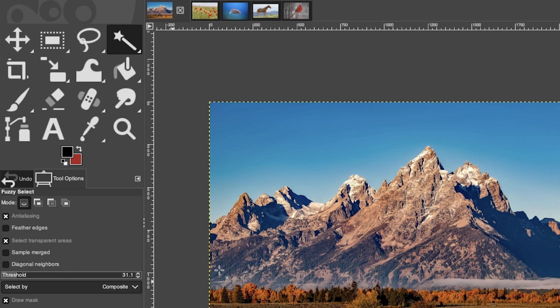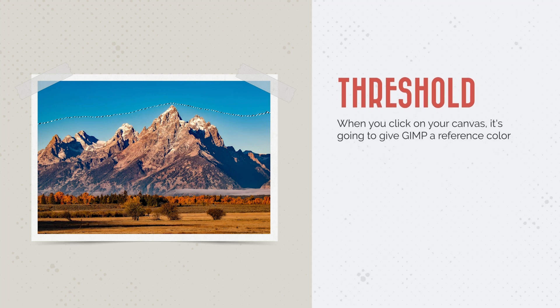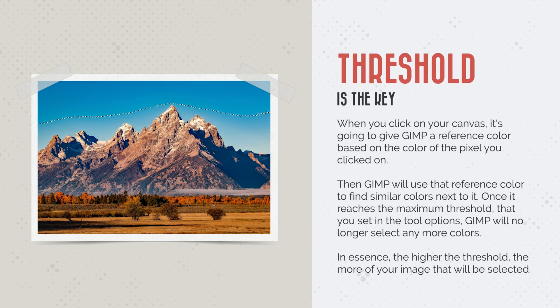Here's how it works: when you click on your canvas, GIMP gets a reference color based on the pixel you clicked on, then uses that reference color to find similar colors next to it. Once it reaches the maximum threshold you set in the tool options, GIMP will no longer select any more colors. In essence, the higher the threshold, the more of your image that will be selected.